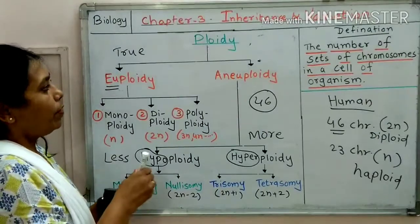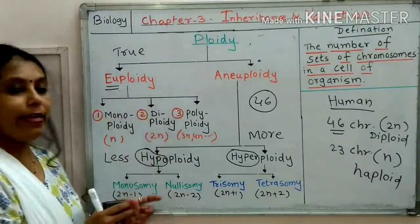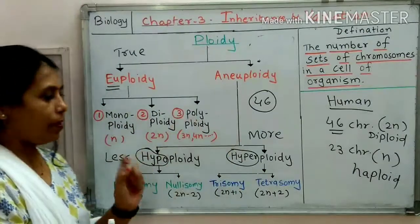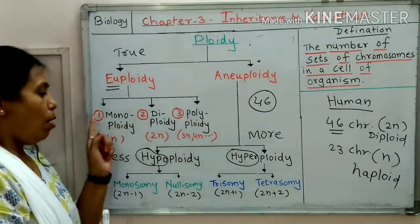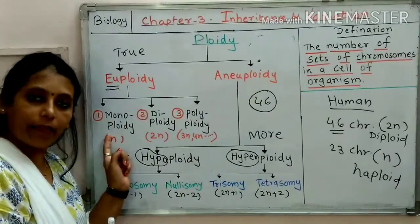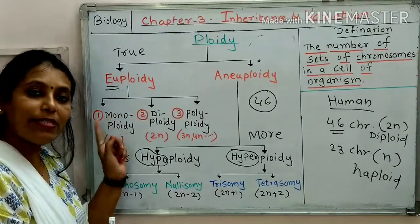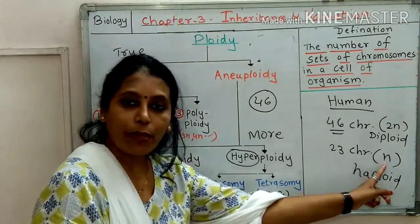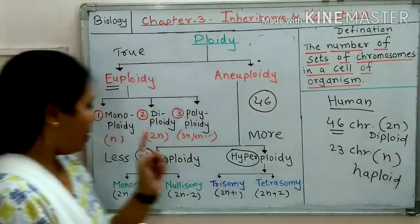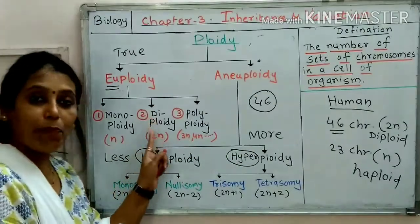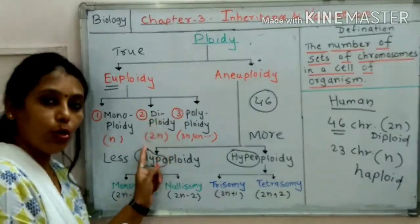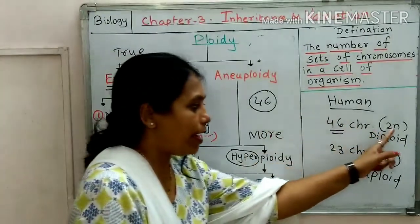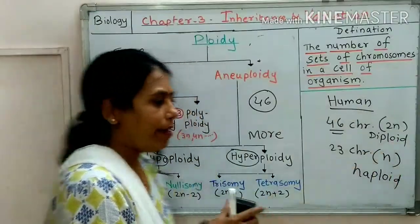Now, hypoploidy is divided into three types. The first one is called monoploidy — mono means single set, and for a single set we use the term N. The second is diploidy — di means 2, so 2 sets, 2N. The condition is called diploidy.